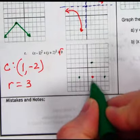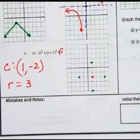1, 2, 3 away over here, and 1, 2, 3 away down here. And then I just try to make a circle out of it.